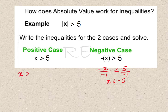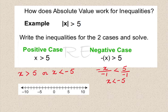Therefore, we have x greater than 5 or x is less than negative 5. On the number line, we graph x greater than 5 with 5 not included, and x less than negative 5 with negative 5 not included.